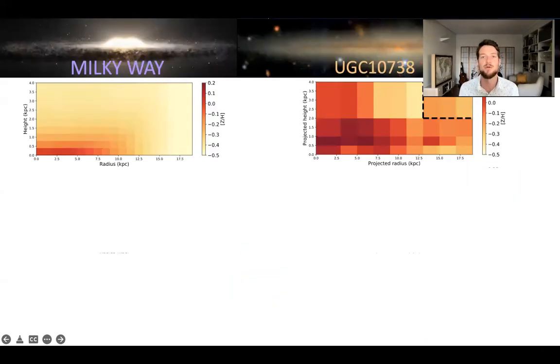But so far I've only shown you what the results are for UGC 10738, without offering a direct comparison to our Milky Way. What I'm going to do now is actually show the Milky Way side by side with UGC 10738 in a figure showing the projected radius versus the projected height. For the Milky Way, we're using the models from Galaxia, developed by Sanjeev Sharma, that offer a direct comparison between the Milky Way and other galaxies.